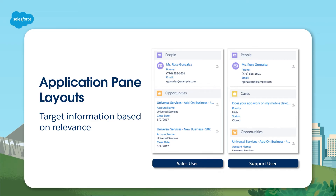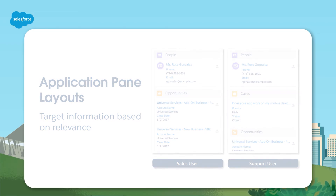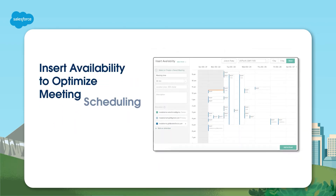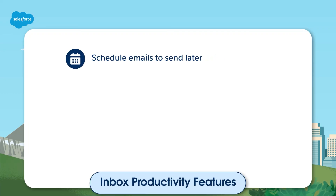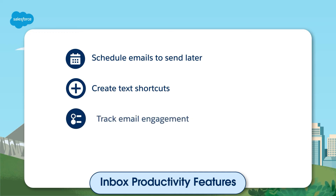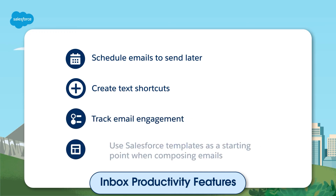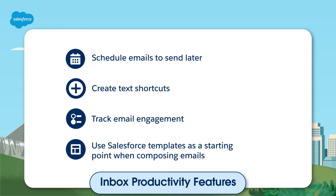Users with Inbox licenses can be given access to even more productivity features — for example, including meeting availability options in their email. After the email is sent, the recipient can click one of the options to immediately book a time slot for their meeting. If the rep's calendar fills up in the meantime, the recipient only sees the times still available. Other Inbox productivity features include the ability to schedule emails to send later, create text shortcuts for most commonly used phrases, track email engagement, and use Salesforce templates as a starting point when composing emails.